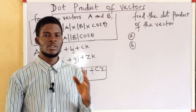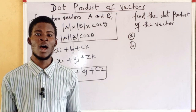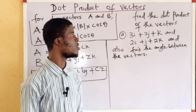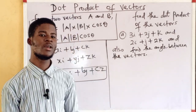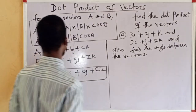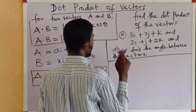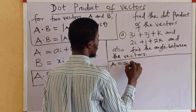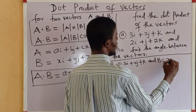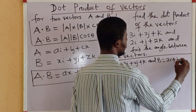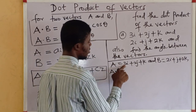So we can determine the angle between two vectors, and we can also determine the dot product of two vectors. The question before us is: find the dot product of the vectors and determine the angle between them. Let's say vector a is equal to 3i plus 2j plus k.